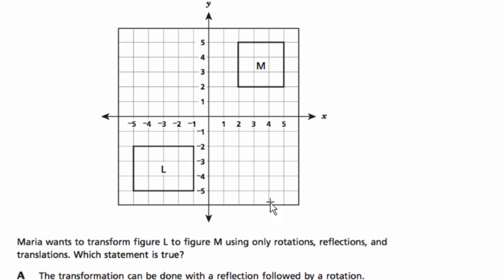Let's read the question. Maria wants to transform L to M using only rotations, reflections, and translations. Which statement is true? Well, I know it's true already. She can't do it, right? It can't be done.